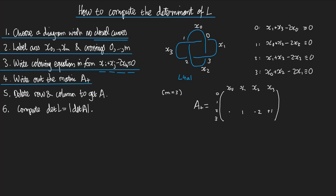What goes in row 2, column x0? I go to the colouring equation for crossing number 2, and I look for the coefficient of x0. x0 doesn't appear, so it has coefficient 0.